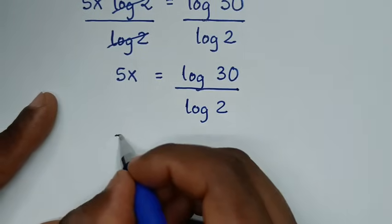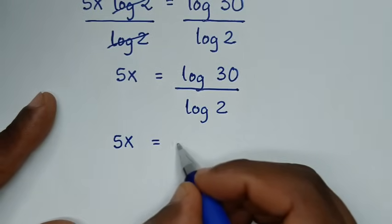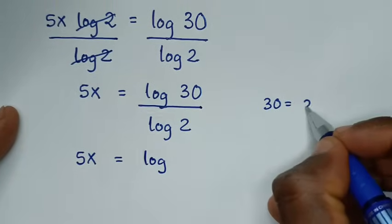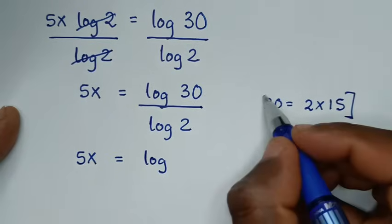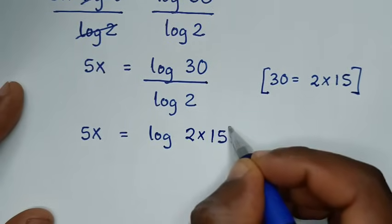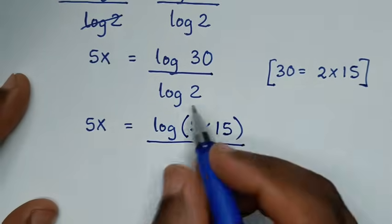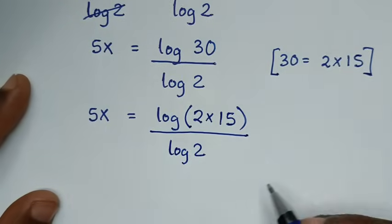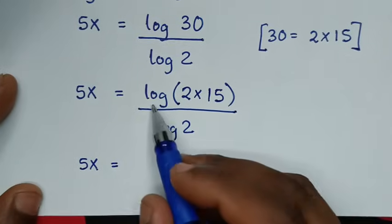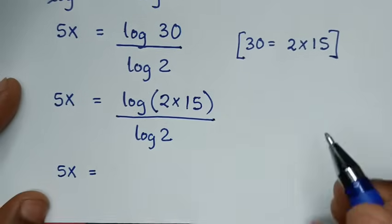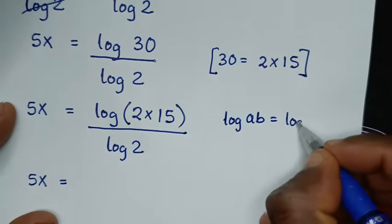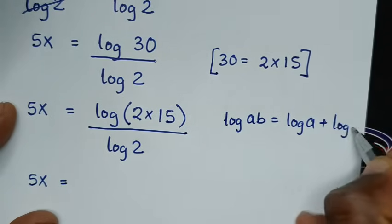Then in the next step, 5x is equal to log of 30. Now 30 is equal to 2 times 15, so from here log of 30 becomes log of 2 times 15 in brackets, over log of 2. This part, log of 2 times 15, is in the form of log of a times b, which is equal to log of a plus log of b.